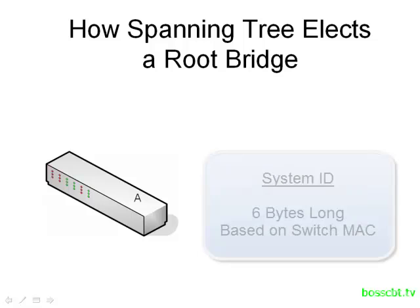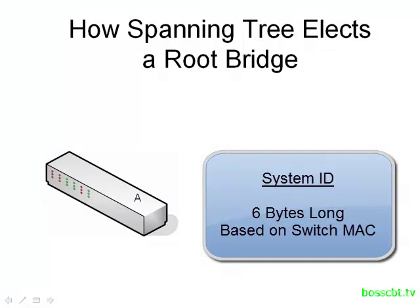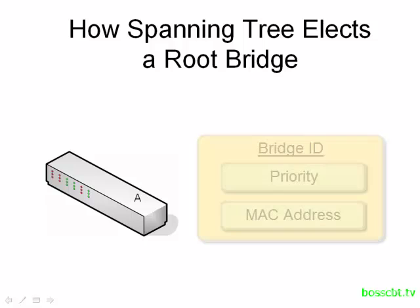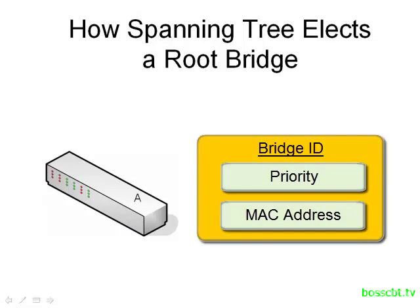The second part of the Bridge ID is known as the System ID, and this is 6 bytes long. This value is based upon the MAC address of the switch. Every device on an Ethernet network has a unique MAC address, and switches are no different. So the System ID is based upon that particular value. When we combine the priority and the System ID together, we have a Bridge ID.